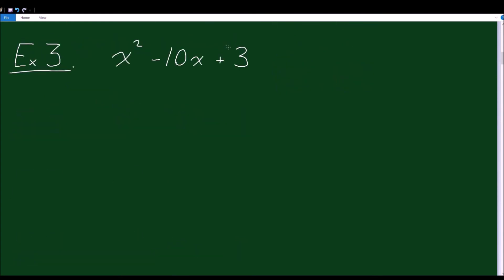Okay, let's do another one. We have x² - 10x + 3. So what multiplies to 3 and adds to -10? Well, what multiplies to 3? You can have 3 times 1. You can have -3 times -1. I think those are the only numbers that you can use to multiply to get to 3, because after all, 3 is a prime number.